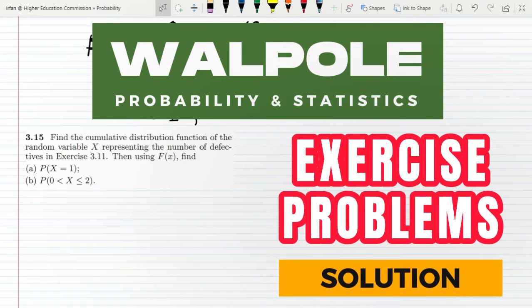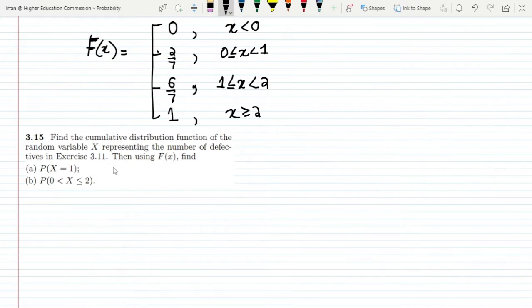Hello guys, I hope all of you will be fine. This is the exercise problem for Probability and Statistics for Engineers and Scientists by Walpole, and this is Chapter 3, exercise problem 3.15.